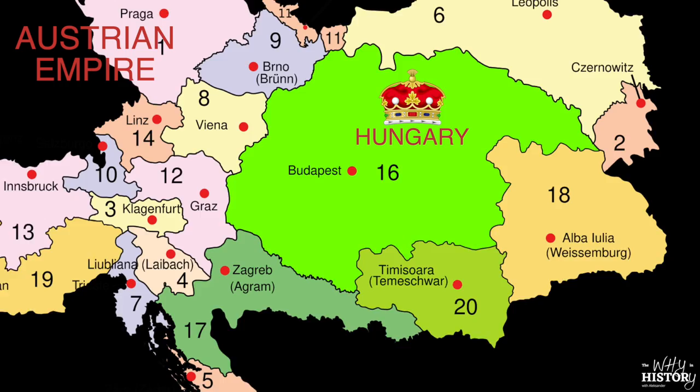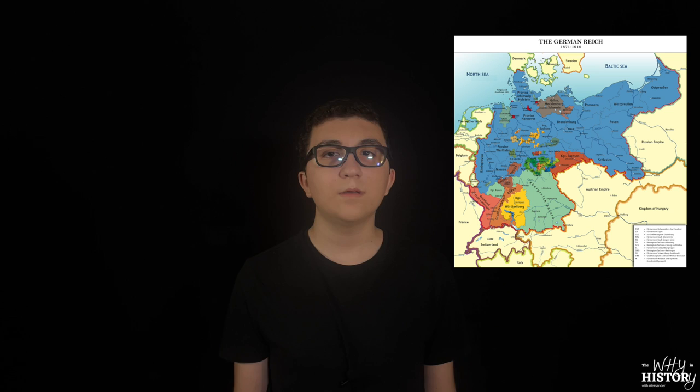In 1867, Austria elevated Hungary, which it controlled as part of its empire, to the same status Austria had, becoming the dual monarchy of Austria-Hungary. Four years later, all the German states came together and created the German Empire — well, almost all of them, as Austria was left out. Austria-Hungary had its differences with Germany and Italy; however, they all set that aside and formed the Triple Alliance.